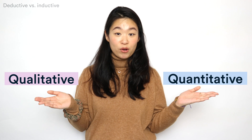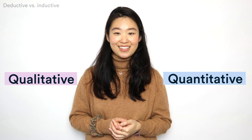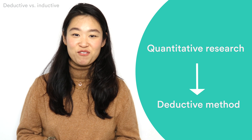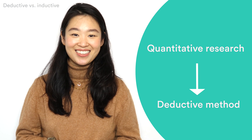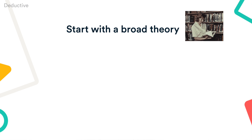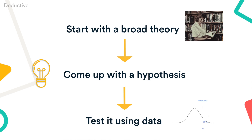Qualitative and quantitative approaches tend to look quite different in their research process. Quantitative research is often associated with a deductive method. You start with a broad theory based on existing research, come up with a specific hypothesis, and test it using data. To do this scientifically, you need to carefully plan your research design and use systematic procedures to make sure your results are valid.